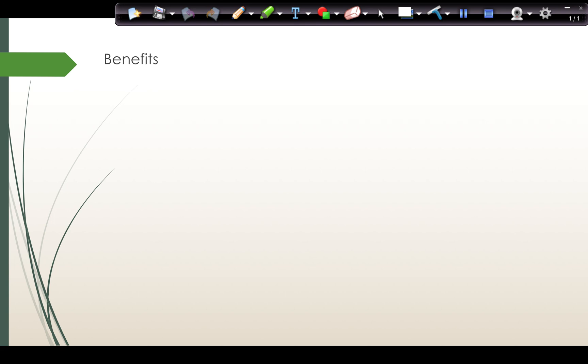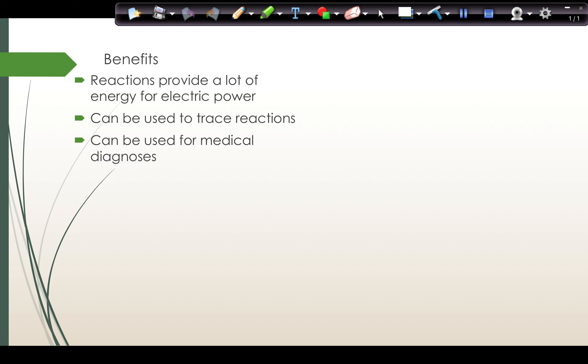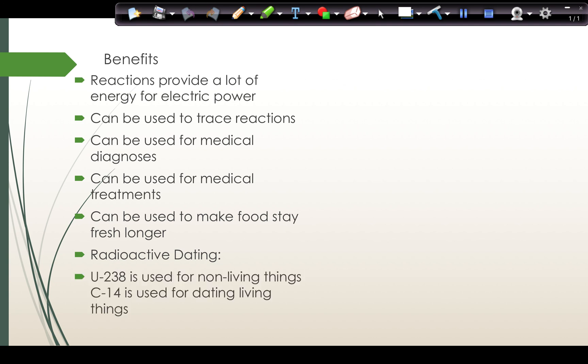Another thing that you should be aware of are the benefits and risks for nuclear chemistry in general. Nuclear reactions provide a lot of energy for electric power. That's a benefit. They can be used to trace reactions or find out how a chemical reaction happens. They can be used for medical diagnosis and medical treatments. They can be used to make food fresh longer. We also have the processes of radioactive dating. Uranium-238 is used to date never-living things or non-living things, and carbon-14 is used to date things that were once living.